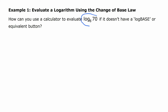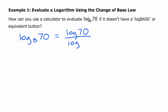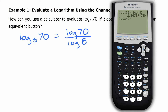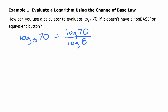The most obvious application is to take a logarithm in some other base and evaluate it with base 10 logs, useful if your calculator doesn't have a log-base button. We can write log base 8 of 70 as log base 10 of 70 over log base 10 of 8. Entering log of 70 divided by log of 8 into the calculator gives roughly 2.043. We can confirm this with the calculator's log base feature: log base 8 of 70 is indeed approximately 2.043.